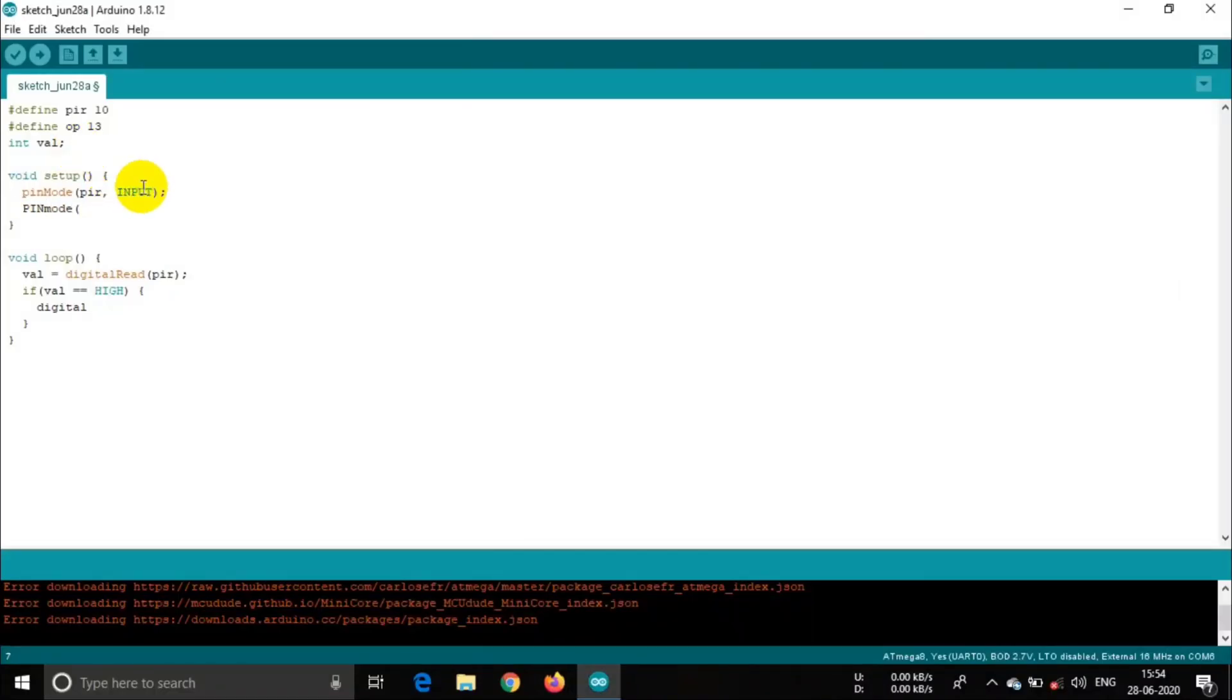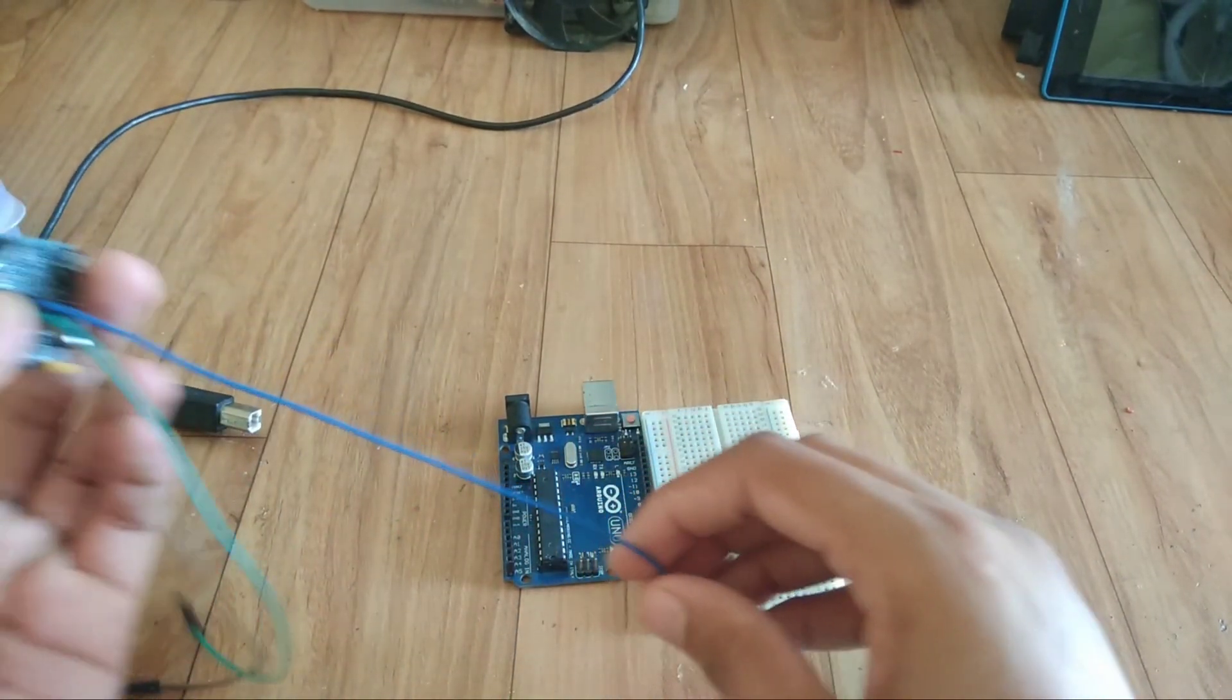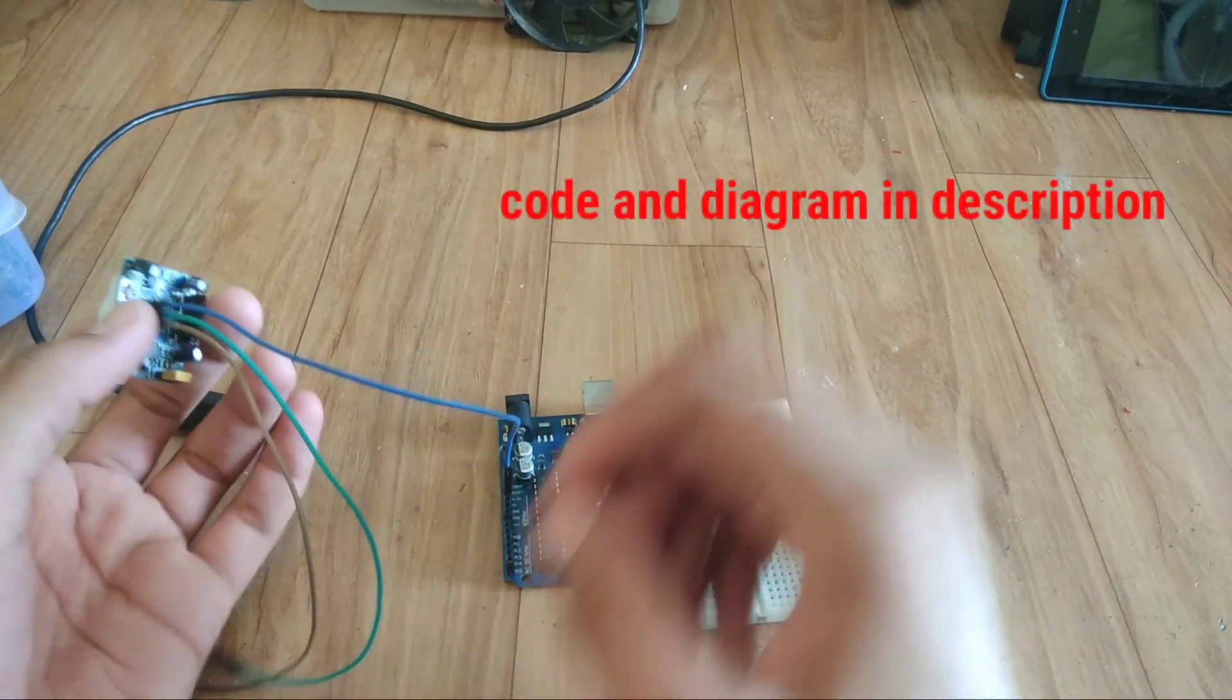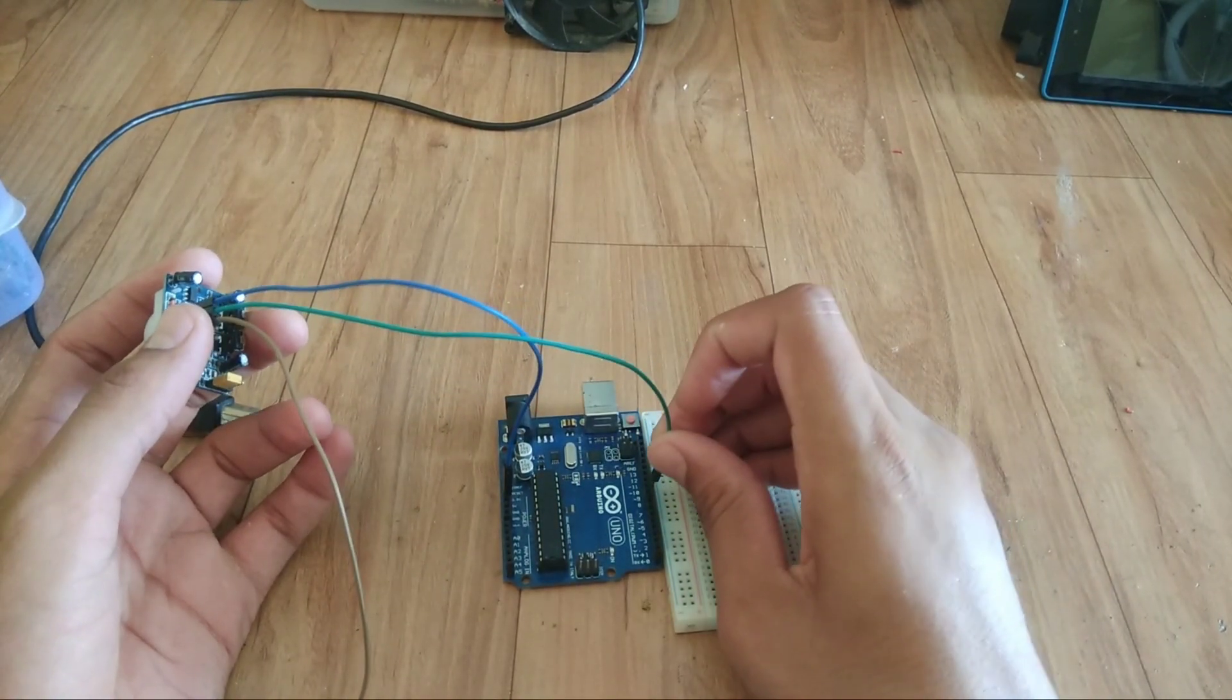Now let us interface this sensor with Arduino. I wrote a simple sketch, then upload this to the Arduino. Now let us make connections. For that, connect VCC pin of sensor to 5V, ground pin to ground, and output pin to pin number 10.